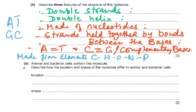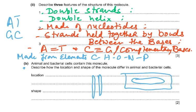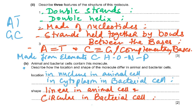Part B: animals and bacteria both contain DNA. Describe how the location and shape of the molecule differ in animal and bacterial cells. In animal cells, DNA is present in the nucleus, and in bacteria it is present in the cytoplasm as circular DNA. In animal cells the DNA is linear — we have chromosomes — whereas in bacterial cells the DNA is circular. Animal cells have pairs of chromosomes, while bacteria have a single circular chromosome in the cytoplasm.